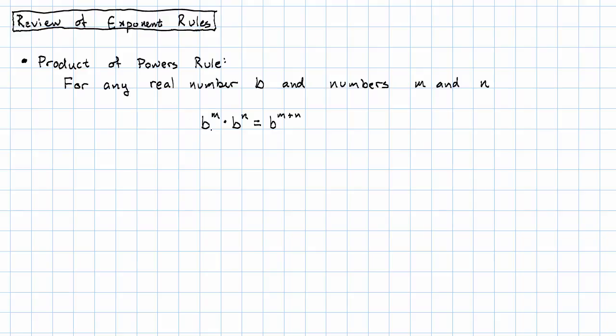Remember, we understood this as: this first exponent represents m copies of the number b. The second one represents n. And therefore, when we multiply them together, we have m plus n copies. So far, this works whenever m and n are integers, as long as b is not 0.